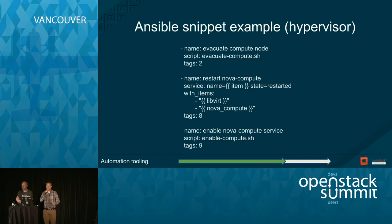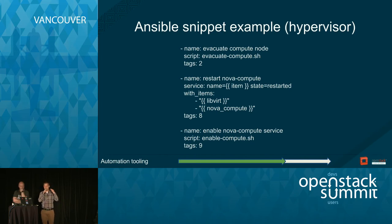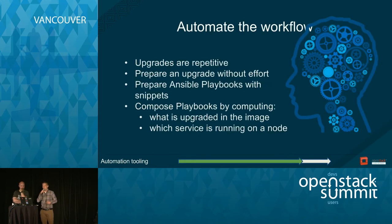This is an example of an Ansible snippet — a piece of Ansible code. We create one snippet per service we want to upgrade. This example shows actions to evacuate the compute, restart the service, and enable nova-compute. Pay attention to the tags — they are important for ordering the different actions we compose together.